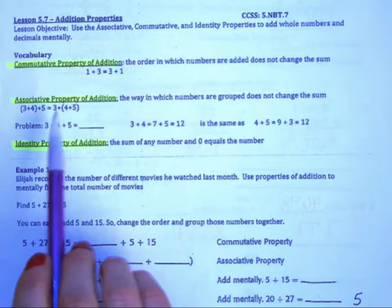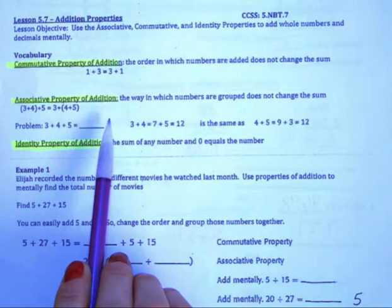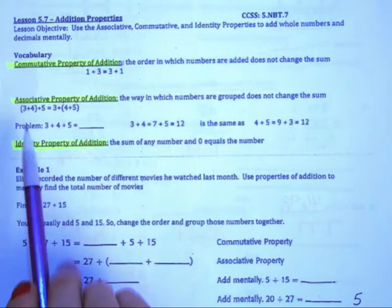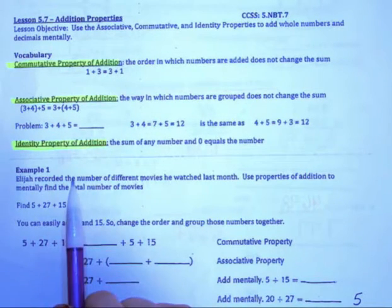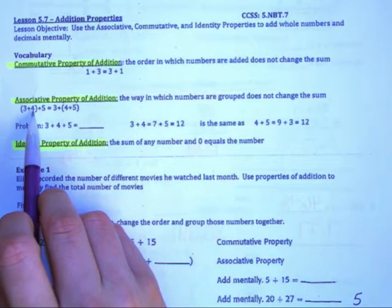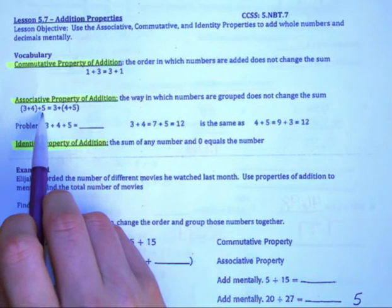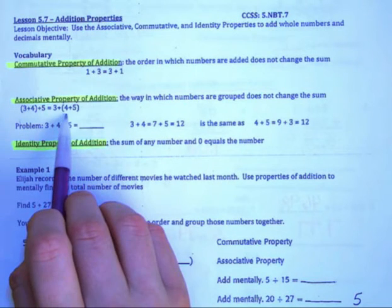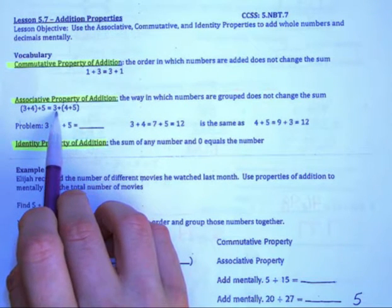The associative property of addition says the way in which numbers are grouped does not change the sum. So for example, if we use parentheses and we group 3 plus 4 together and then add 5, our sum will still be the same thing as if we were to group 4 and 5 together and then add in 3.